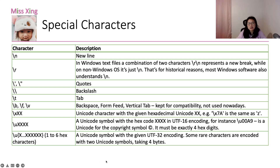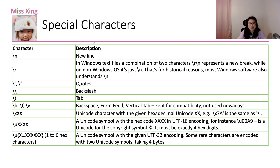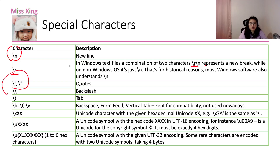If we want to use single quotes or double quotes and have new lines, you can use the backslash-n. This one I use often. In Windows text files, if you want a new line you use backslash-r and backslash-n — backslash-r represents a carriage return. But nowadays if you just use backslash-n, most Windows software still understands it as a new line.